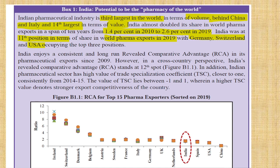In terms of the pharma industry, we might think India is first, but it is the third largest. In terms of volume, first is China, second is Italy, and third is India. India is not the largest manufacturer by volume; it is third. In terms of value, India is the 14th largest.